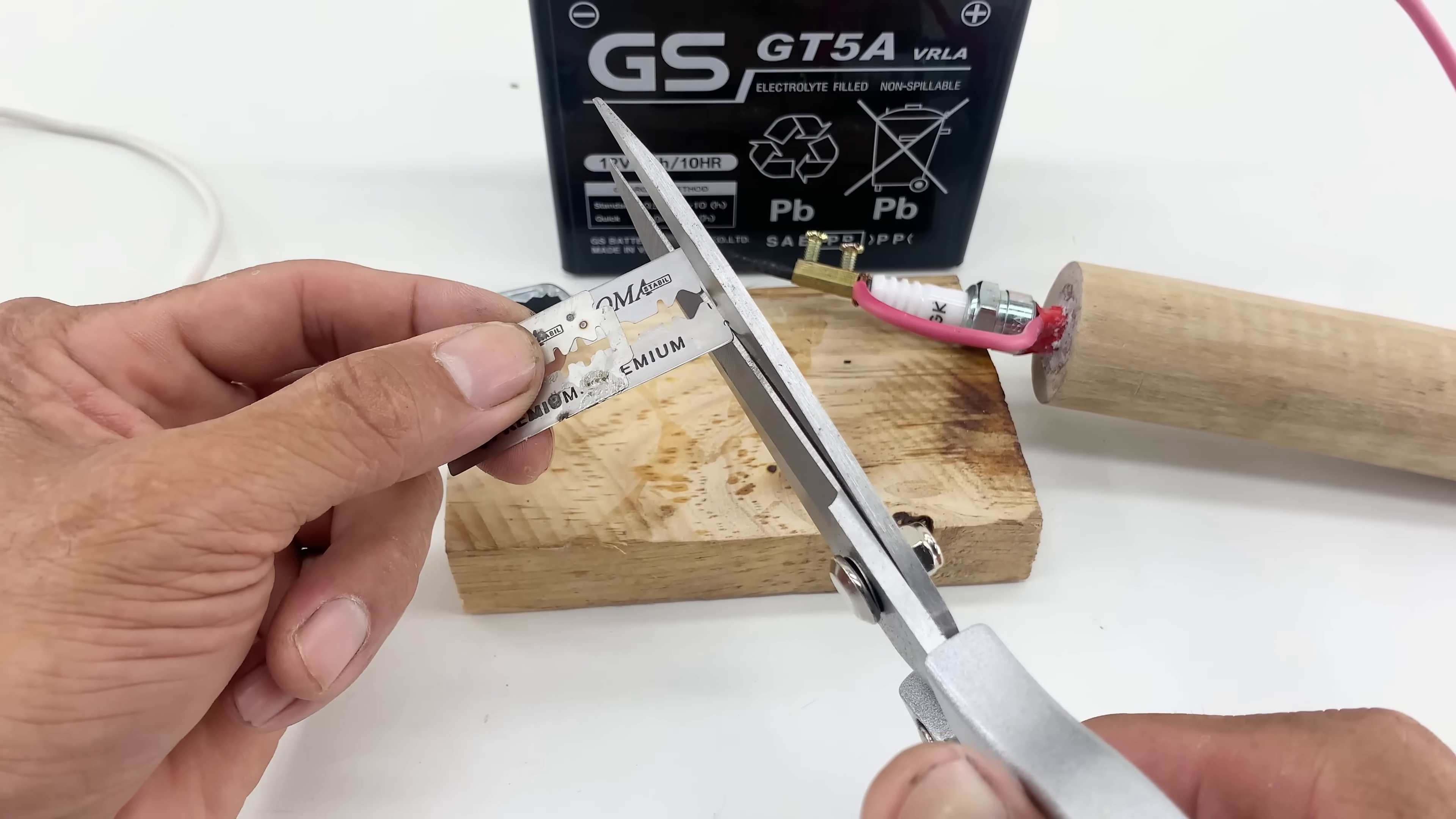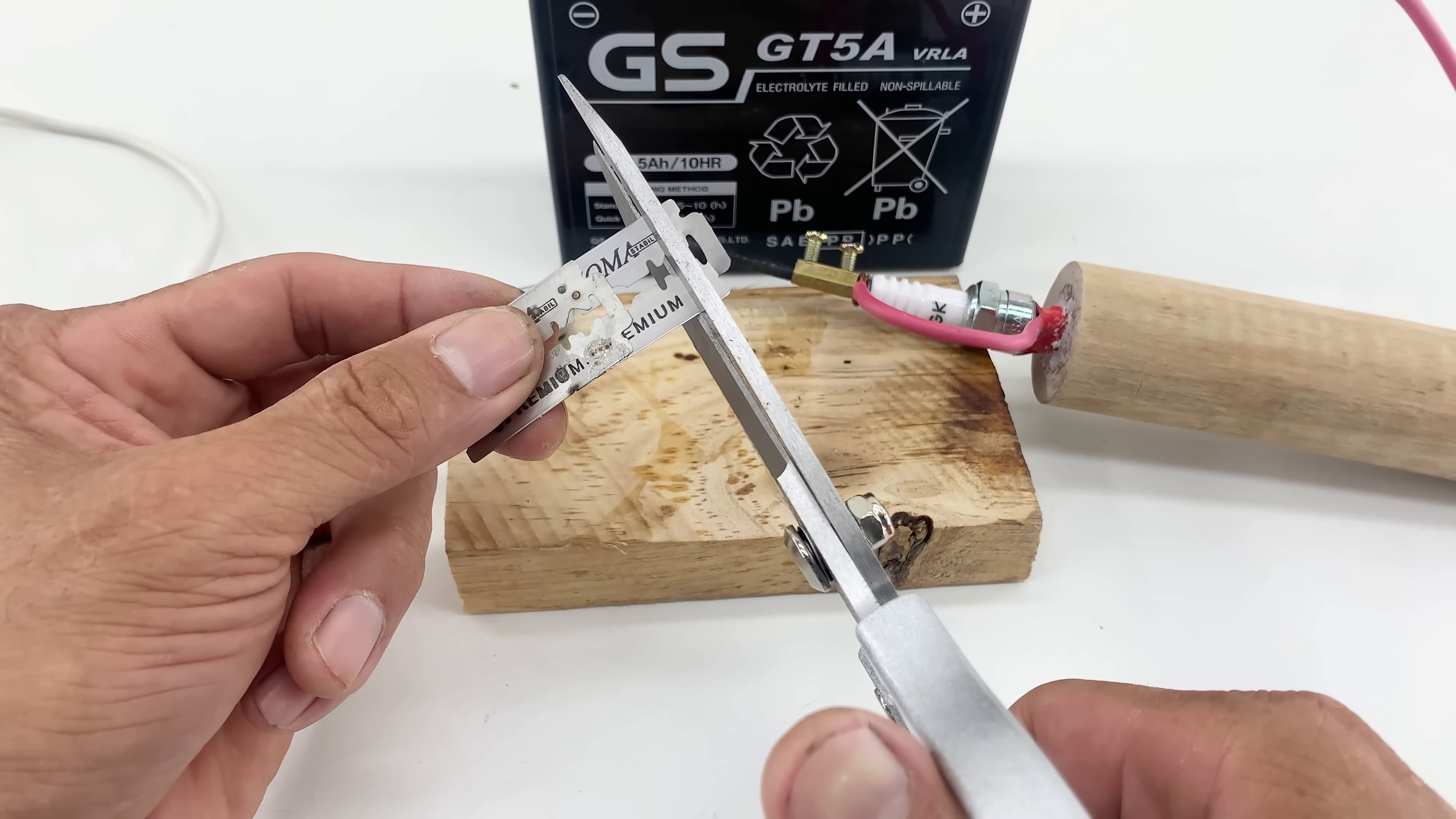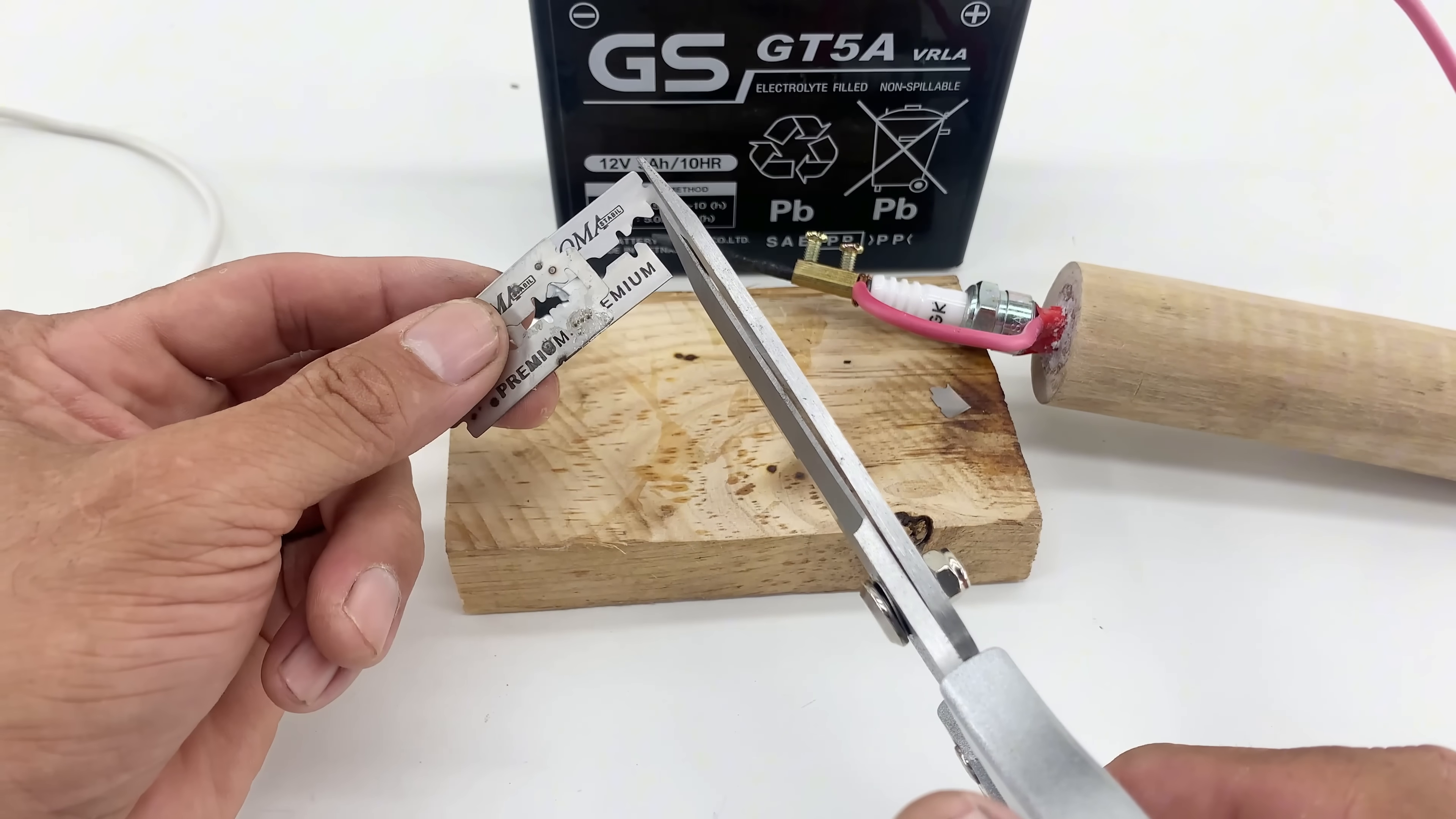I use scissors to cut off a small piece of razor blade. This razor blade will be the solder for my next project.